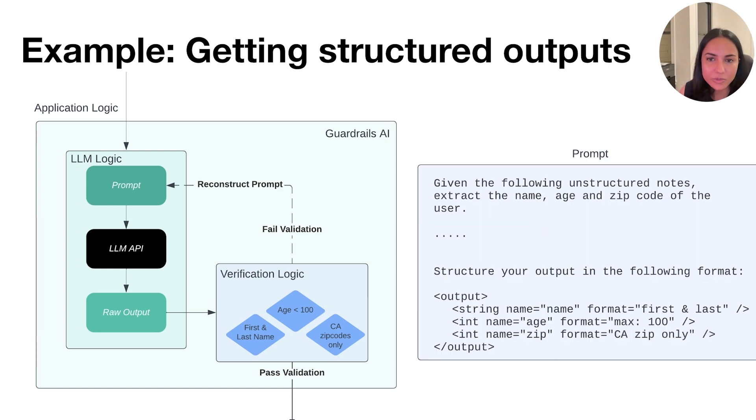For starters, we create a prompt. So with guardrails, one of the first things to do is to create a placeholder where guardrails can automatically inject information about the output structure. So this information about that the output structure should contain three keys of name, age, and zip code, and what their respective format should be is automatically created and inserted by guardrails.